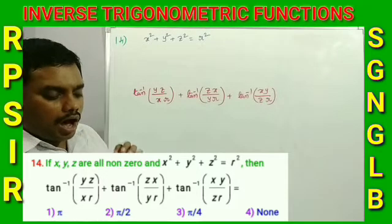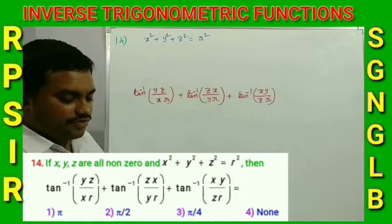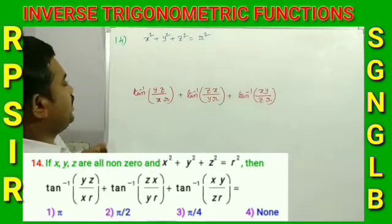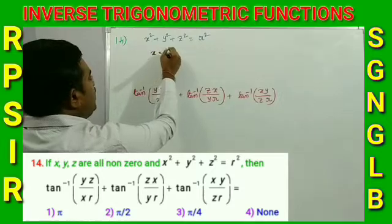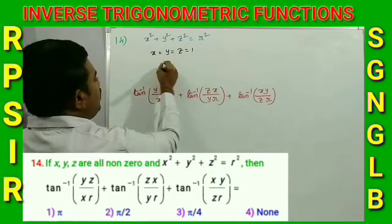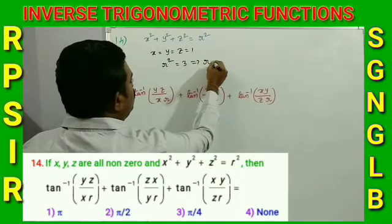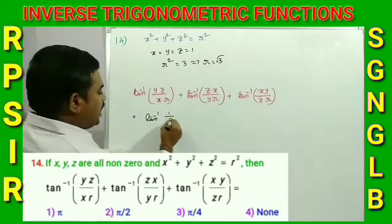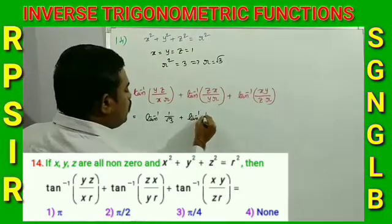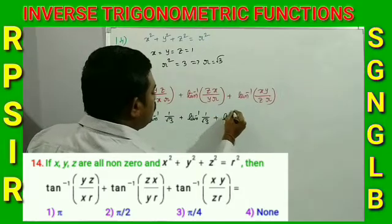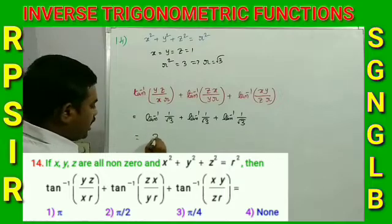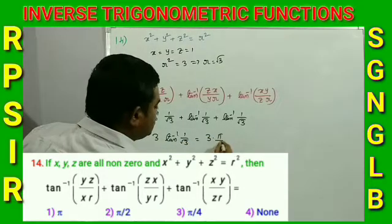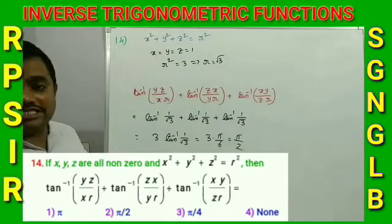Number 14: Given x² + y² + z² = r², find tan⁻¹(yz/xr) + tan⁻¹(zx/yr) + tan⁻¹(xy/zr). Setting x = y = z = 1 gives r² = 3, so r = √3. Each term becomes tan⁻¹(1/√3), and the sum is 3 × tan⁻¹(1/√3) = 3 × π/6 = π/2. Option 2 is the correct answer.